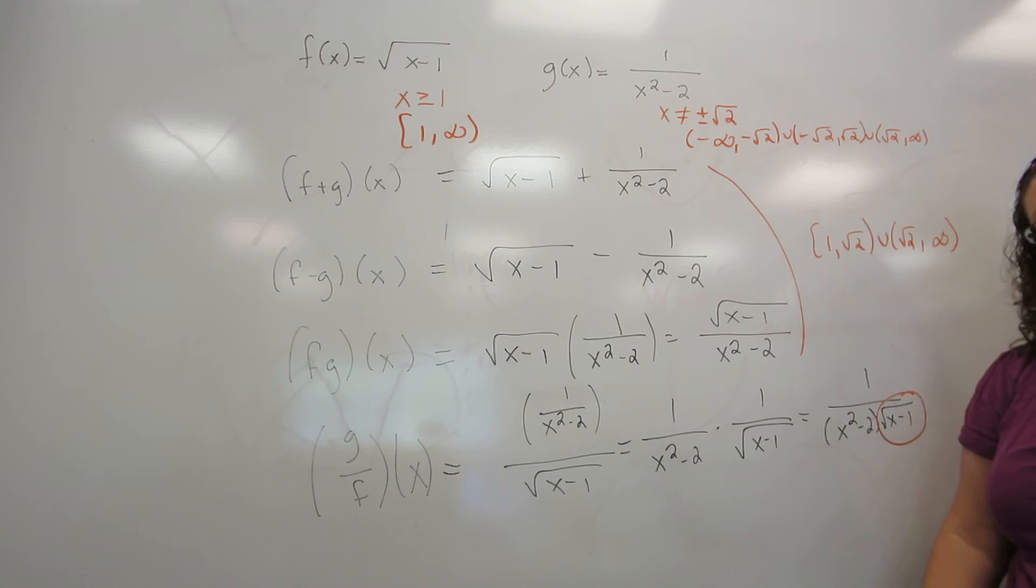And there is because now this square root is on the bottom. If I were to plug in x equals 1, I'd get a 0 in the denominator. So it's going to be the same domain here, except I no longer can allow 1 as a possibility because it now makes the denominator 0.